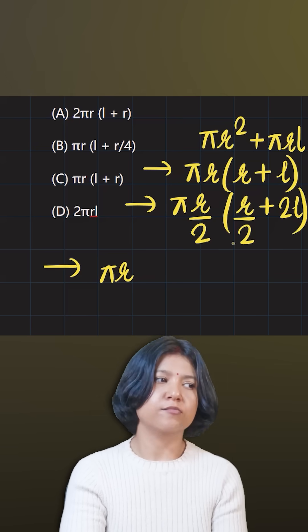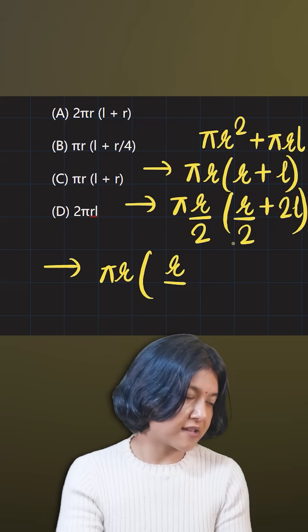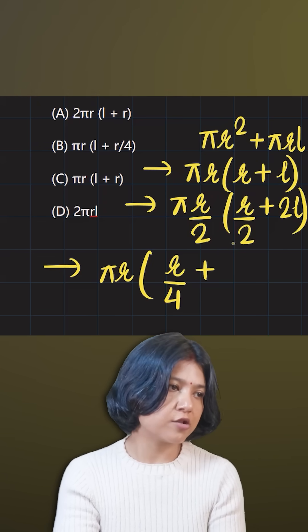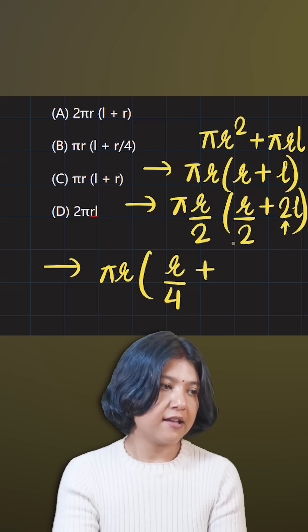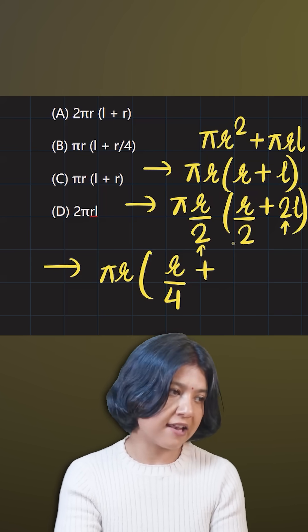From the denominator, I can multiply to both the values inside, so r divided by 4. Because I'm multiplying this two inside, I get r by 4, and this 2 and 2 cancels out for l, giving me just l.